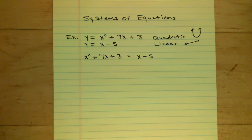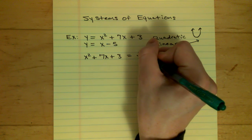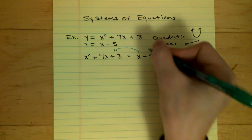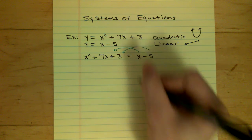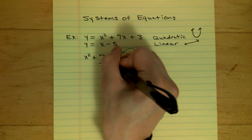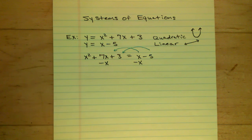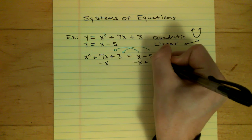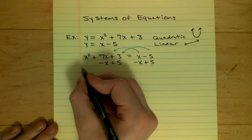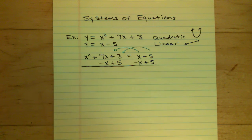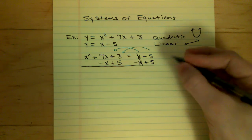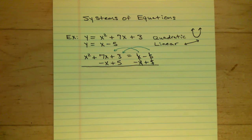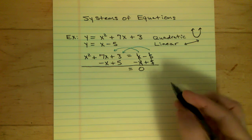Now what you want to do is get everything to the left side. So I want to get this x and this negative 5 over to the left side. We can do that by subtracting the x and adding the 5. So I'm going to subtract x from both sides, and then add 5 to both sides. On the right side, the x and the negative x cancel out, and the negative 5 and positive 5 also cancel out.